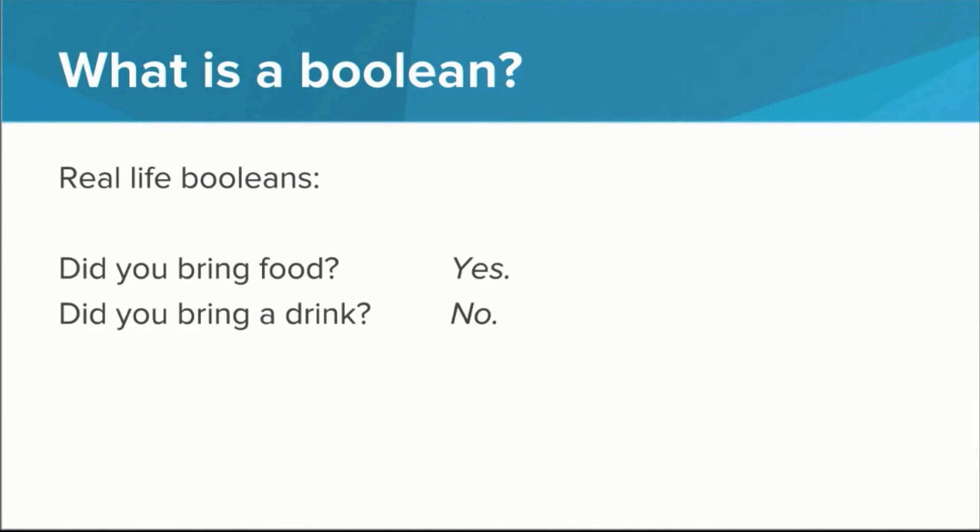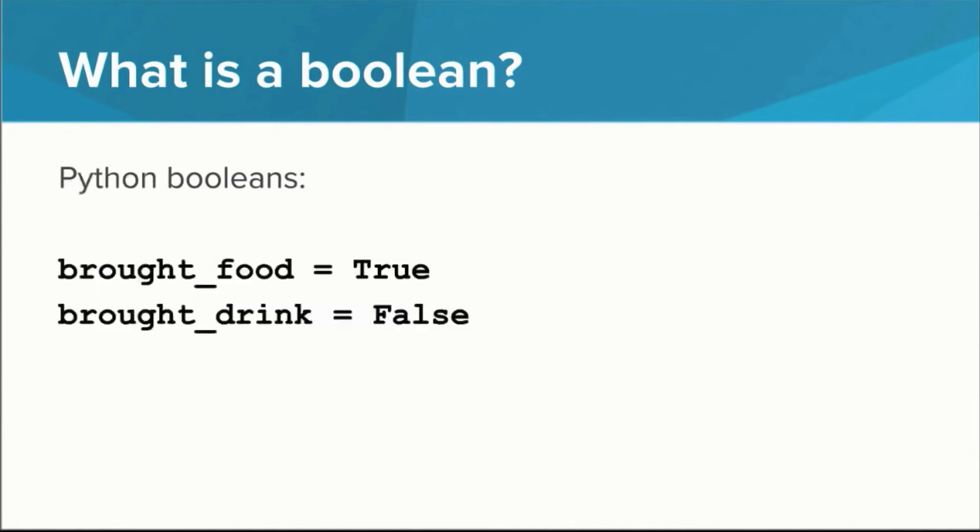Here are some examples of what booleans might look like in real life. And here's what they look like in Python. This is a pair of variables whose values are true and false.